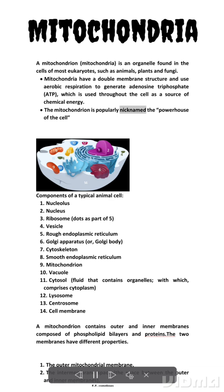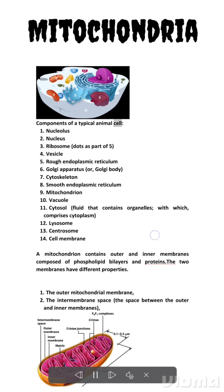The mitochondrion is popularly nicknamed the powerhouse of the cell. Components of a typical animal cell: 1. Nucleolus, 2. Nucleus, 3. Ribosome (dots as part of 5), 4. Vesicle, 5. Rough endoplasmic reticulum, 6. Golgi apparatus (or Golgi body).